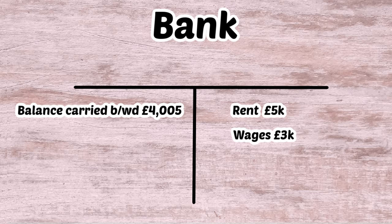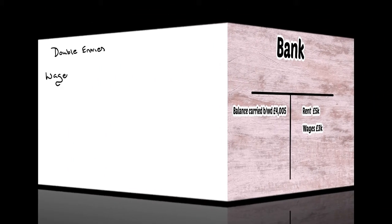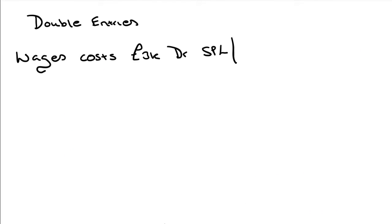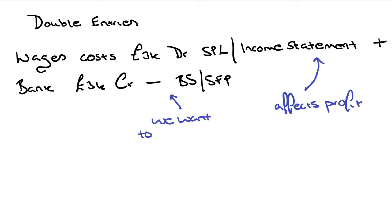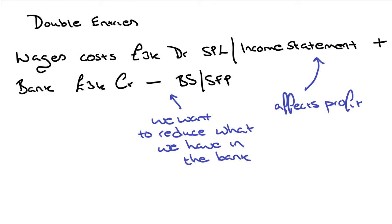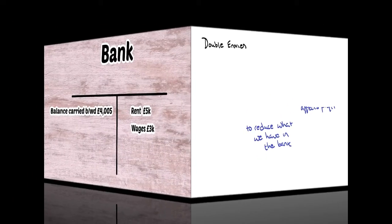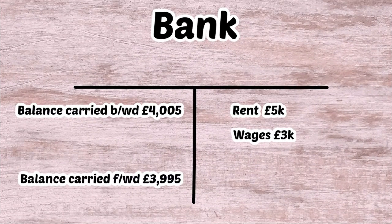Next we introduce wages, which also sits on the right hand side of the bank T account because it's a credit — we're reducing the bank balance. The double entries are: debit wages cost in the statement of profit and loss, reducing profit in the year, and credit bank £3,000 to reduce what we have in the bank.